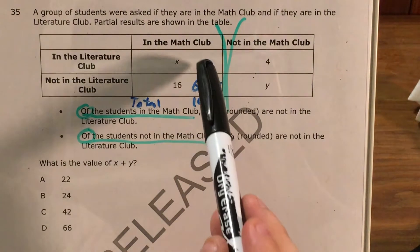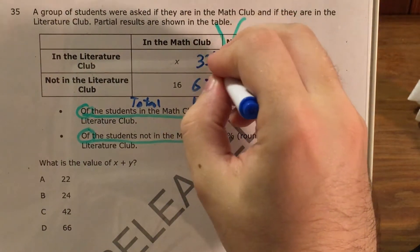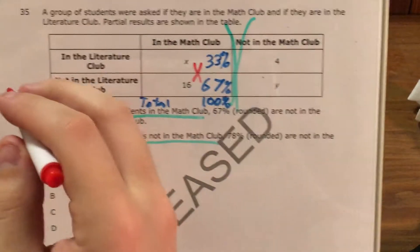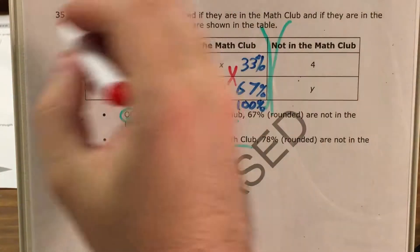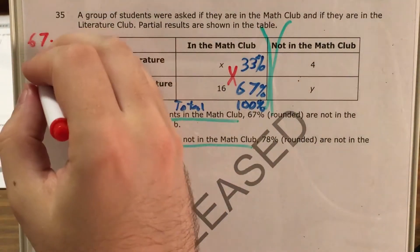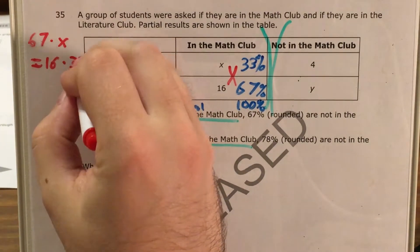So if this box is 67%, this one has to be 33%. Now at this point I can go ahead and treat this like a proportion, and I can go ahead and use cross-multiplying to try to solve this. So I'll cross multiply these and these, and I will say, and I'll do my work over here, that 67 times this variable x equals 16 times 33.